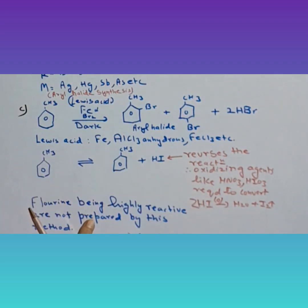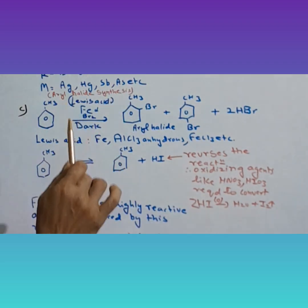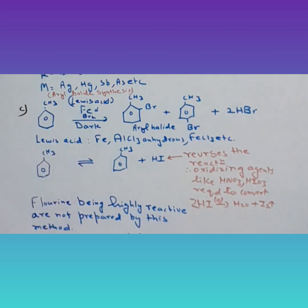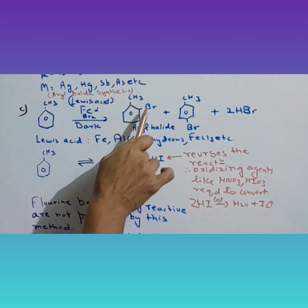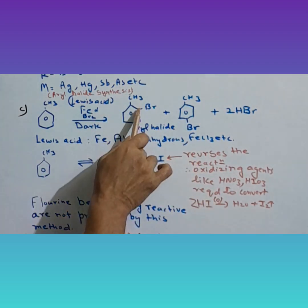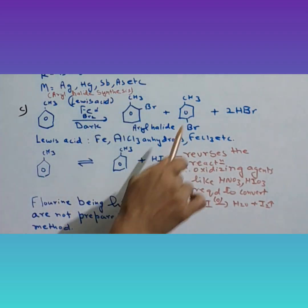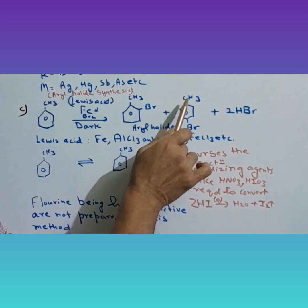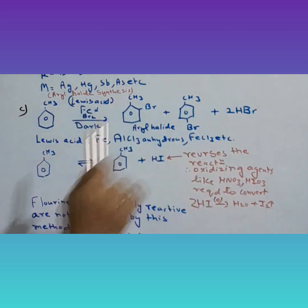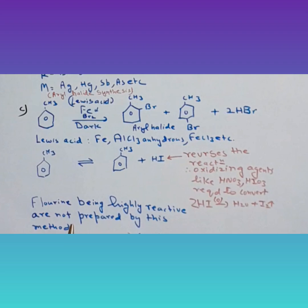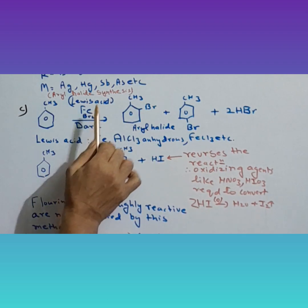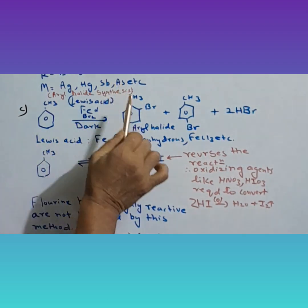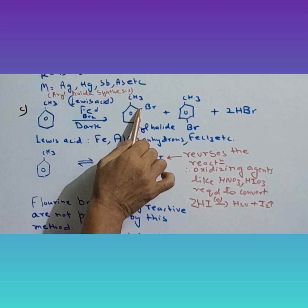Fe is taken as Lewis acid. Bromine gas is reacted with toluene in the dark. We end up with aryl bromide - orthobromotoluene and parabromotoluene plus 2HBr liberated. HBr is a side product. This is an electrophilic reaction.